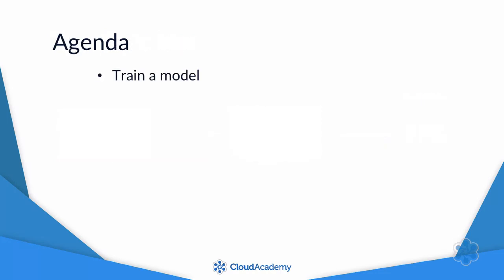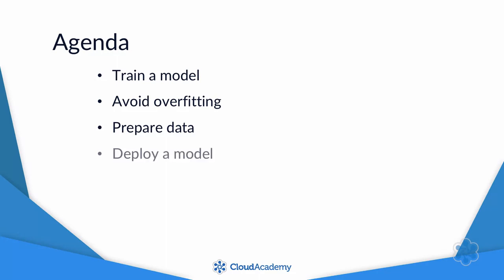We'll start with how to train a machine learning model. Then I'll explain the concept of overfitting and some basic techniques for avoiding it. Next, we'll look at how to prepare your data if it's not in a form that would work well with your machine learning model. After that, I'll show you how to deploy a trained model as a web service, so that your applications can ask it to make predictions. Finally, I'll give you a brief overview of how to add custom code if you need something that ML Studio's pre-built modules can't provide.